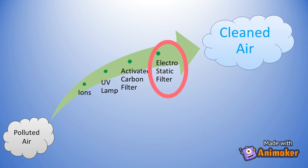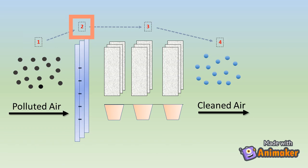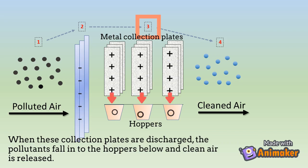Today we will be looking at how the electrostatic filter works, and you can carry out your own experiment to understand this process. Firstly, polluted air from the factory enters the electrostatic precipitator system. Secondly, the pollutants get a negative charge when they pass through the negatively charged plates, which makes the pollutants stick to the positively charged metal collection plates. When these collection plates are discharged, the pollutants fall into the hoppers below and clean air is released.